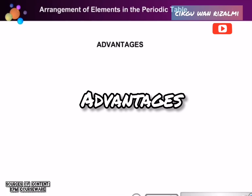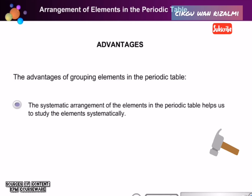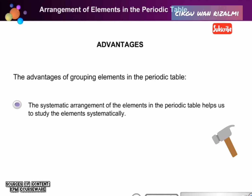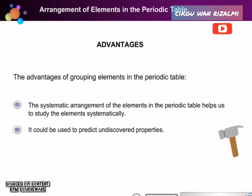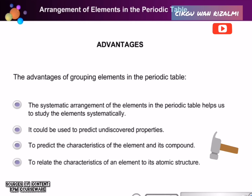What is the advantage of grouping elements in the Periodic Table? The ultimate advantage of the systematic arrangement is that it helps us to study elements systematically, especially in their physical and chemical properties. It could be used to predict undiscovered properties, to predict the characteristics of an element and its compound, and to relate the characteristics of an element to its atomic structure.